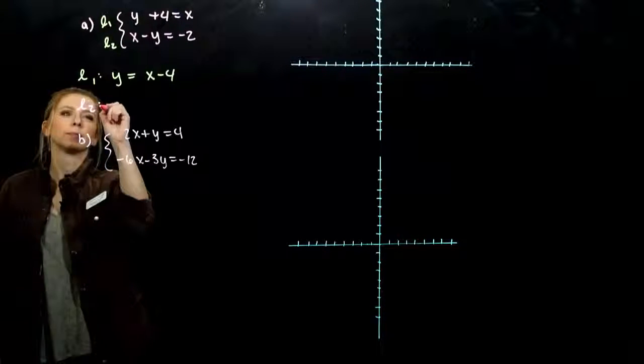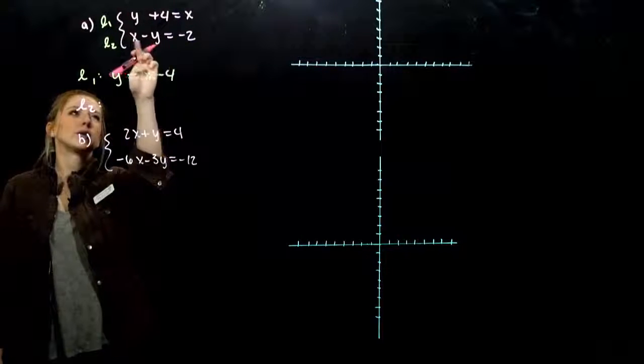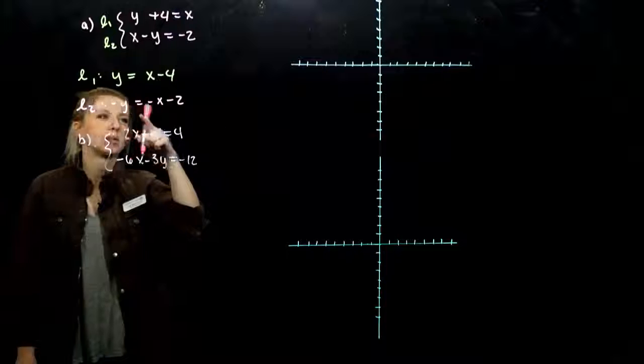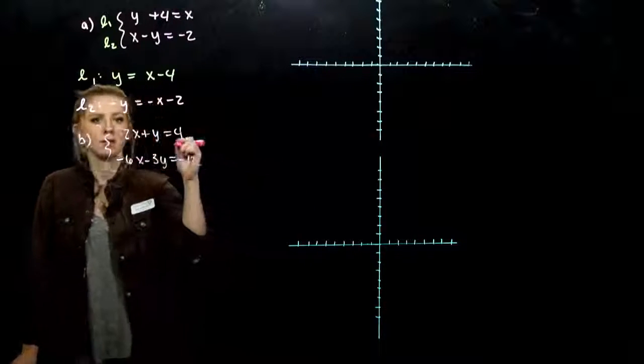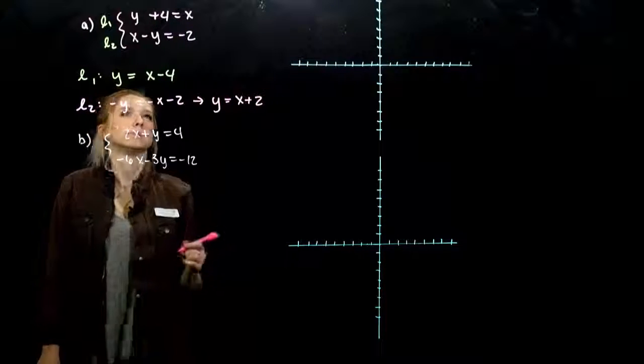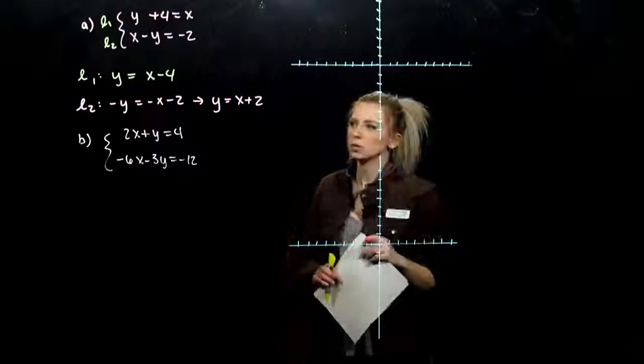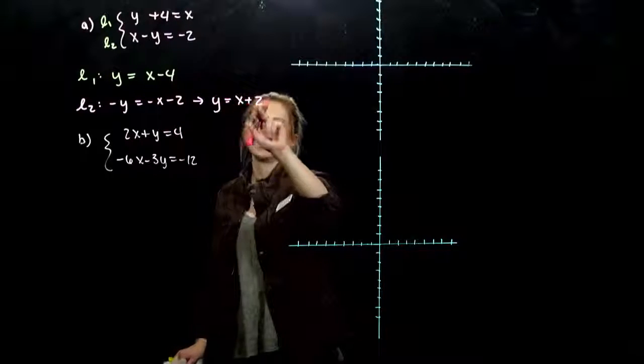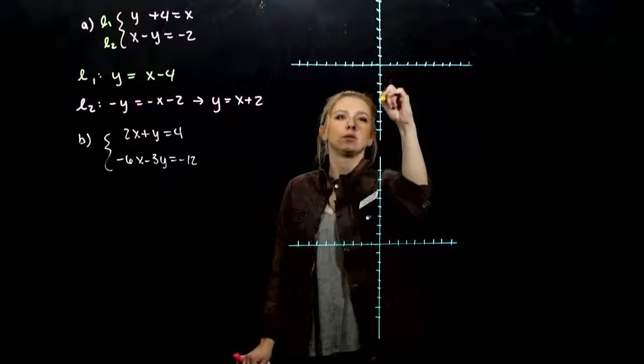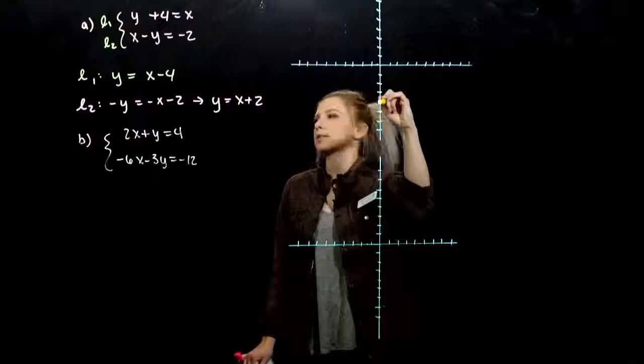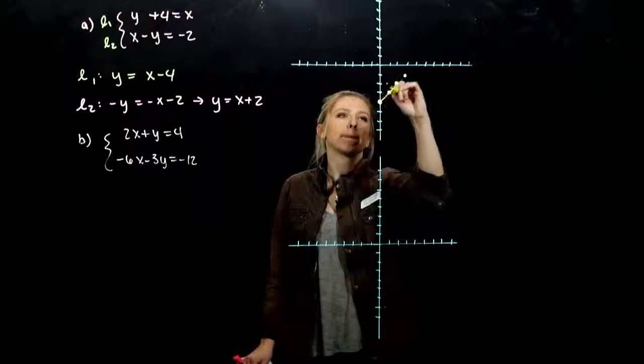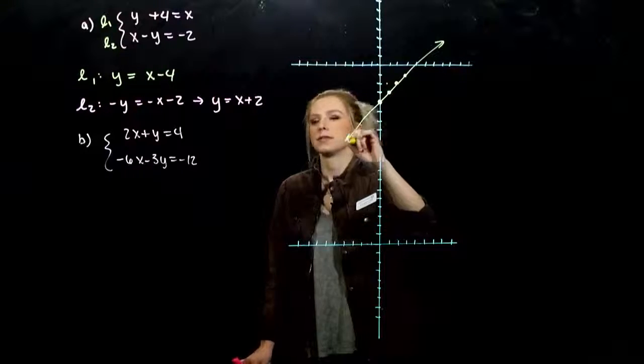And for the second one, if I want to get y on its own, I need to subtract x from both sides. But I need that to be positive, so I'm going to multiply or divide everything by negative. So we're looking at y equals x plus 2. So, graphing those, what did they look like? We have the same slope, but different y intercepts. So the first line goes through minus 1, 2, 3, 4 on the y axis. And we go up 1 over 1. Up 1 over 1. So that was our first line.